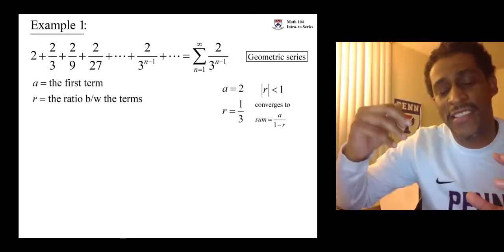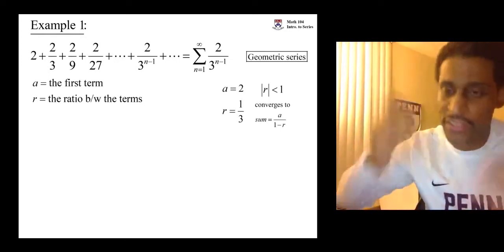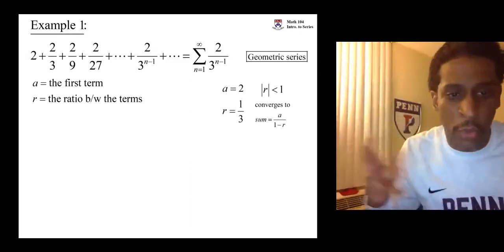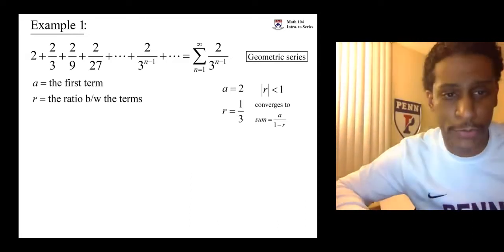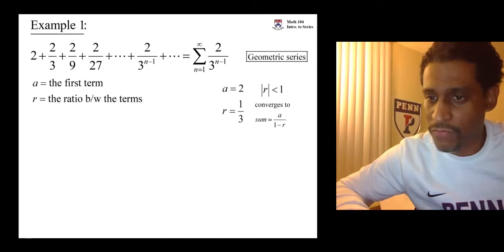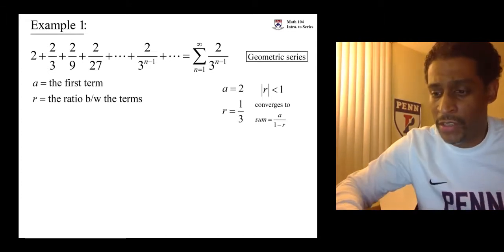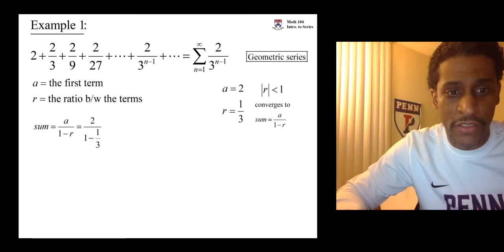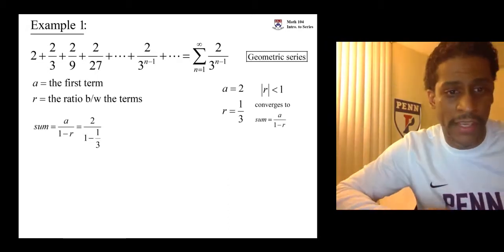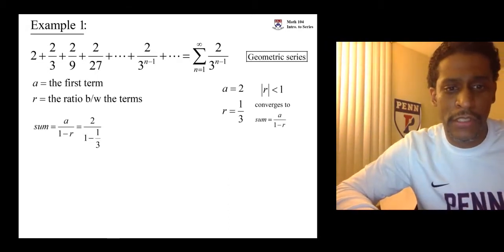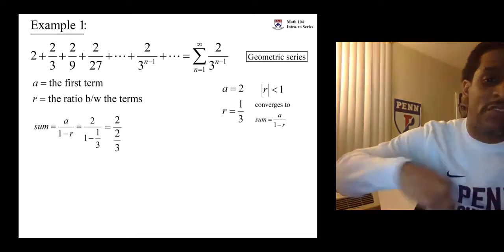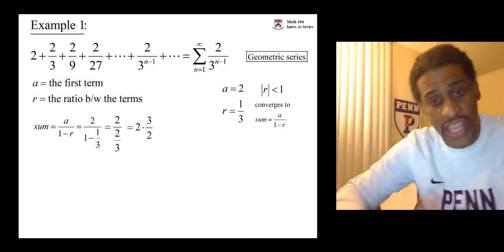It converges to a sum that is the ratio, that is the fraction, a over 1 minus r. It's the first term over 1 minus the ratio. Okay, let's do it. Well, then 1 third is less than 1 in absolute value, so it fits. Plug in a equals 2. Plug in r equals 1 third. Your denominator is going to be 2 thirds. Instead of dividing by 2 thirds, we're going to multiply by 3 halves. 2's cancel out.